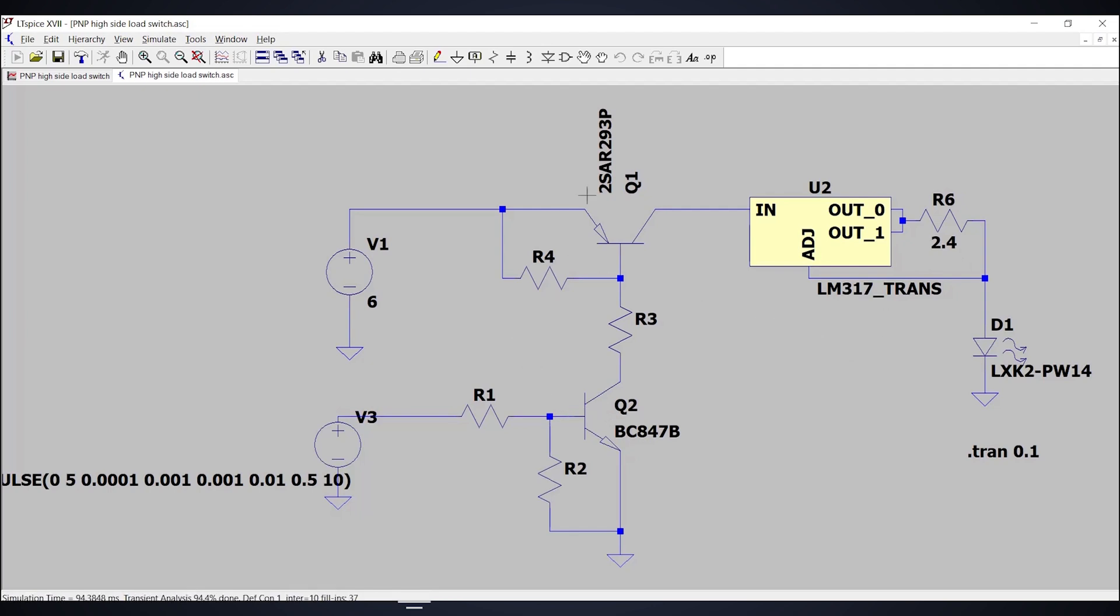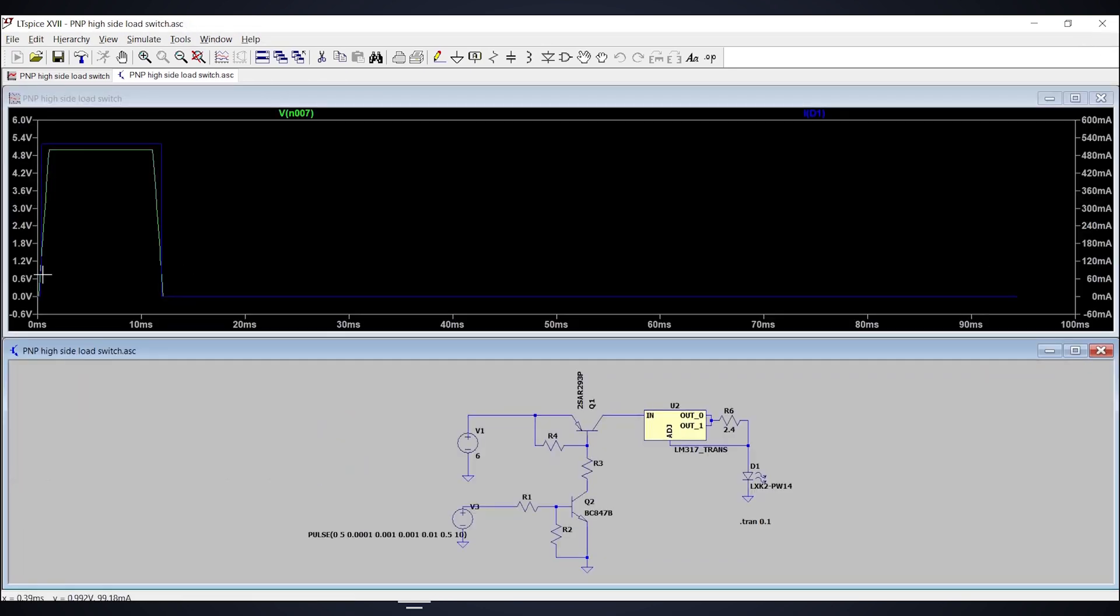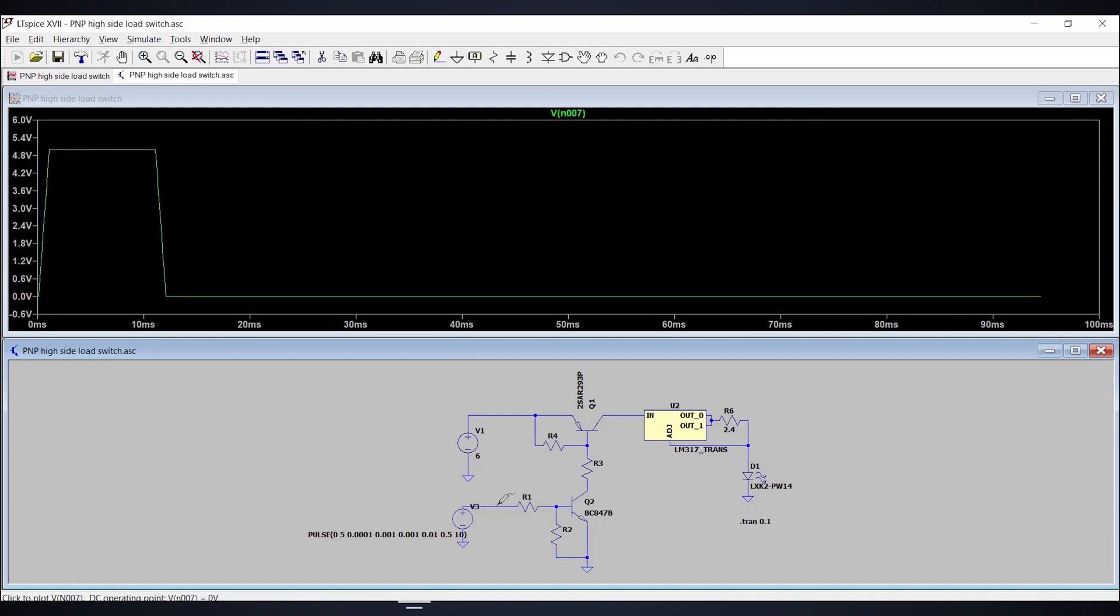We give a pulse to the transistor Q2 which turns it on. If we see when a pulse is given to the Q2, the current starts flowing to the circuit. As soon as the pulse is gone, the Q1 cuts off the power supply and current stops flowing through the circuit.